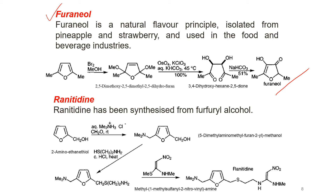For the synthesis of Furaneol, we start with 2,5-dimethylfuran. When it reacts with bromine and methanol, it is converted to an intermediate compound. That intermediate then reacts with osmium tetroxide and potassium chlorate in aqueous potassium bicarbonate to give another intermediate, which upon reaction with sodium bicarbonate gives Furaneol.